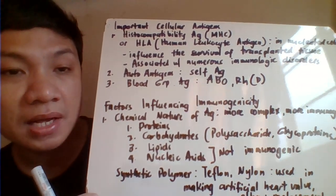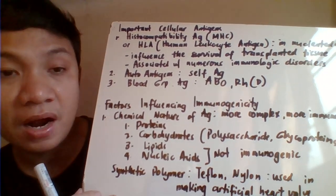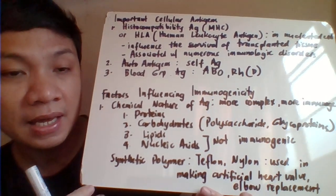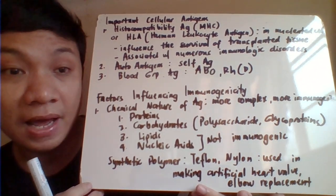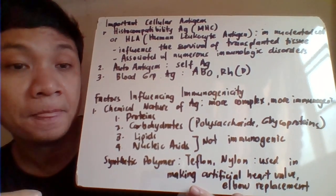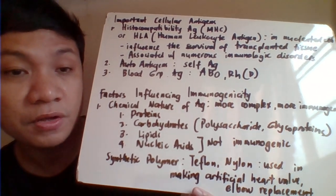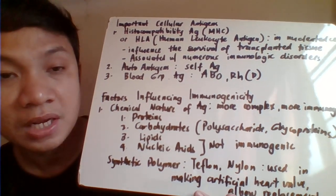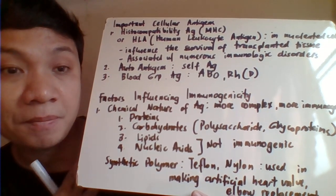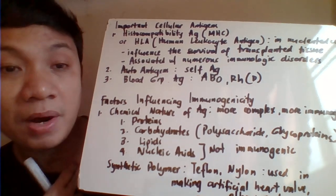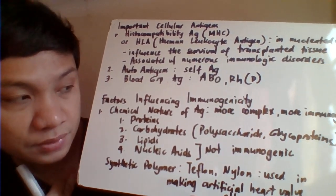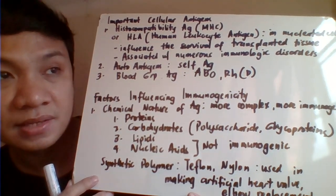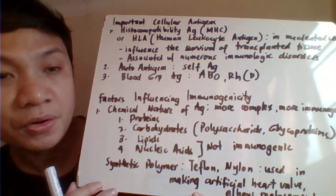We also have blood group antigens — the ABO and RhD antigens — which are also highly immunogenic. These determine the success of blood transfusion; the recipient and donor must be compatible with their blood groups including ABO and Rh. If they are not compatible, rejection can occur because blood group antigens are highly immunogenic.